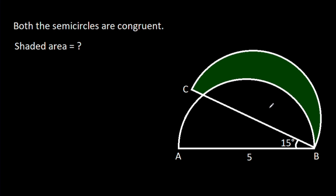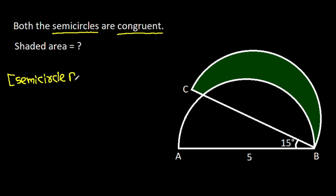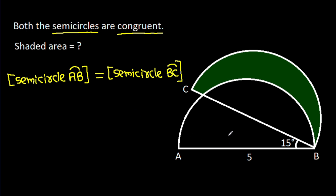In this video we have to find the shaded area. Both semicircles are concurrent, meaning the area of semicircle AB equals the area of semicircle BC. Suppose this area is a, this area is b, and this area is c.